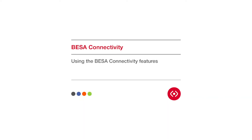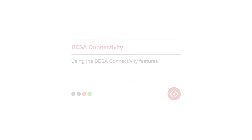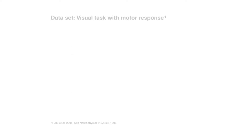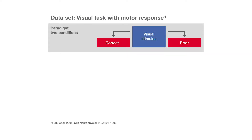In this video, we will explore some of the features of BISA's connectivity workflow in more detail, and how they can be used to find information treasures that are hidden in the data. We have a data set with two conditions, based on correct and erroneous answers to a visual task.